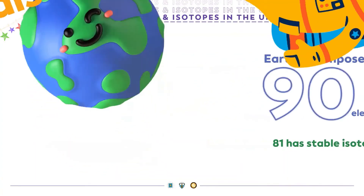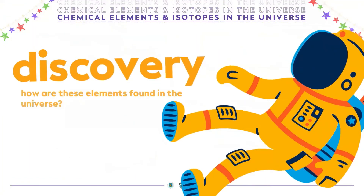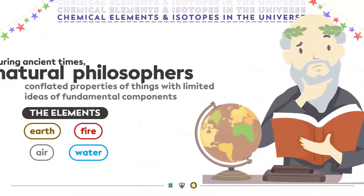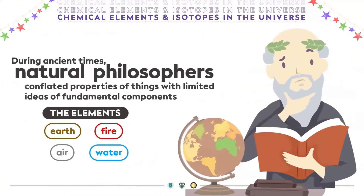How are these elements found in the universe? During ancient times, natural philosophers conflated properties of things with limited ideas of fundamental components. And as a result, Earth, air, fire, and water were thought of as elements. For many years, most people believed these ideas.